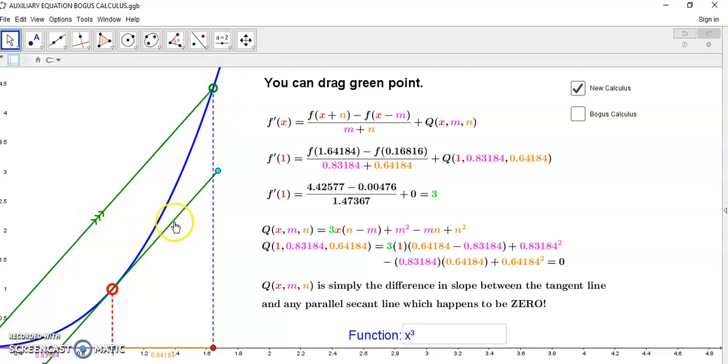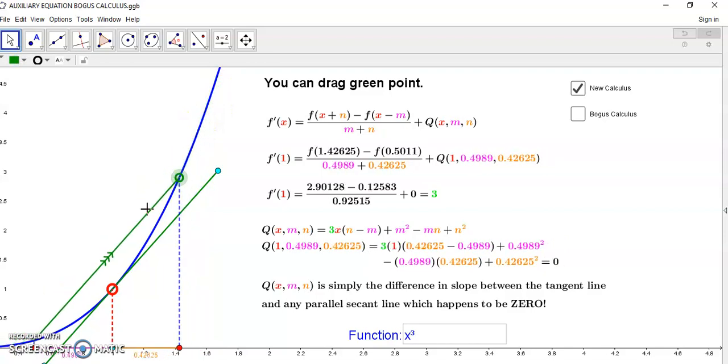So let's look at the new calculus. See? So the secant line is always parallel to the green line. And as you can see, q of x m n is always zero, which is a difference in slopes. Obviously, the difference in the slope of a parallel secant line and tangent line is always going to be zero.